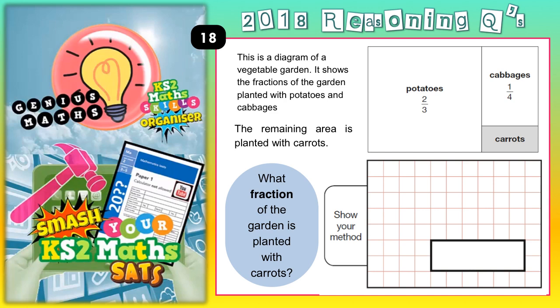Now a massive hint coming up. On your arithmetic paper, whenever you've got fractions with different denominators, you're always encouraged to make the denominators the same first — make some equivalent fractions where the denominators are the same. It's exactly the same here. We need equivalent fractions where the denominators are the same for two thirds and a quarter. The common denominator for thirds and quarters is twelfths.